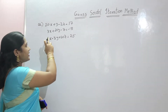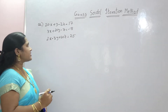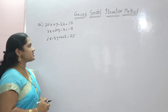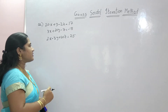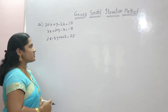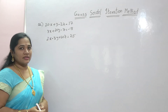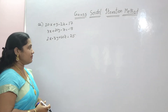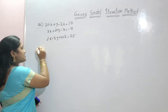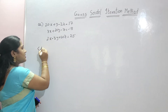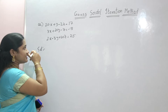Now solve the following equations using Gauss-Seidel iteration method: 20x + y − 2z = 17, 3x + 20y − z = −18, 2x − 3y + 20z = 25. First, rewrite the equations for x, y and z — that is the first step.